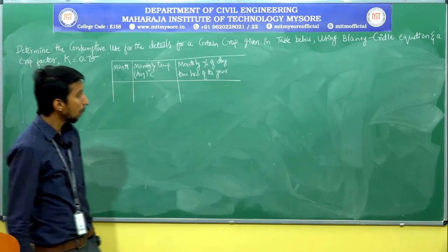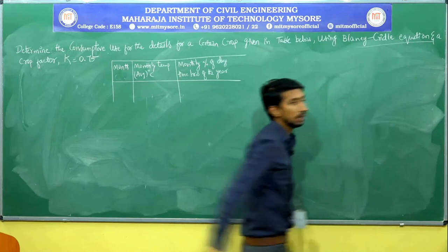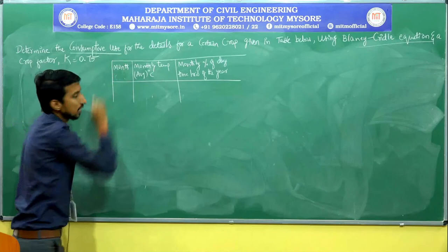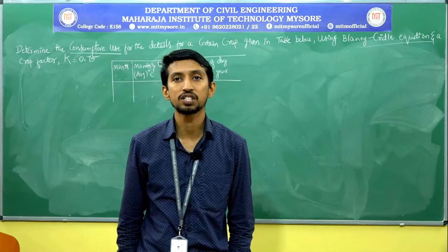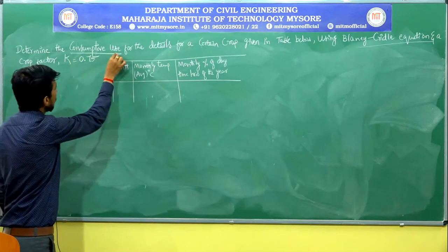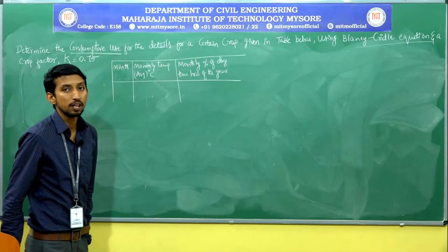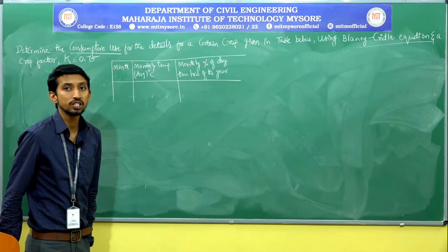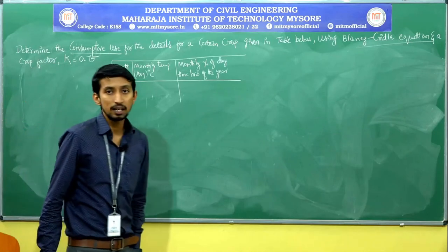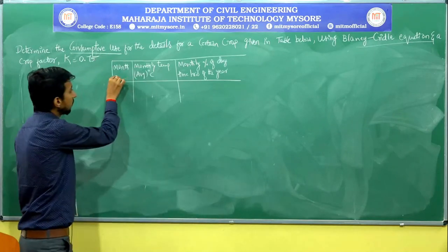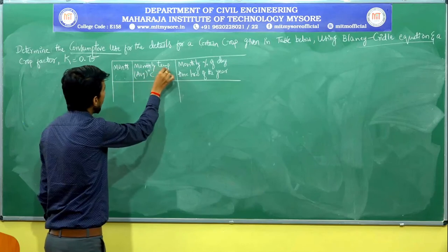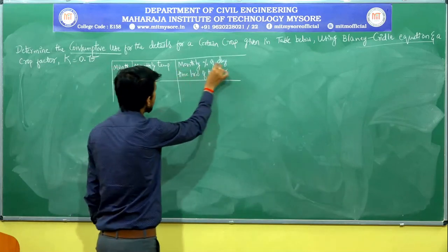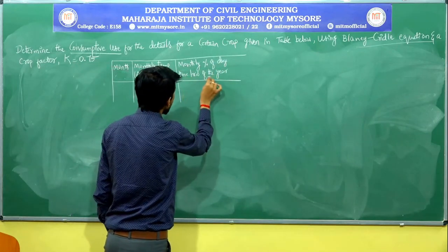By using Blaney-Criddle's equation, here we need to find out the consumptive use — which is nothing but evapotranspiration. We need to find out the potential evapotranspiration. The data given includes various months and their monthly mean temperature.